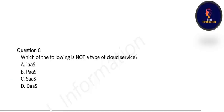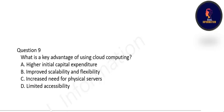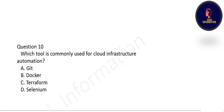Next one: what is the key advantage of using cloud computing? The key advantage is improved scalability and flexibility — option B is correct. Next one: which tool is commonly used for cloud infrastructure automation — Git, Docker, Terraform, or Selenium? The tool commonly used for cloud infrastructure automation is Terraform — option C is correct.